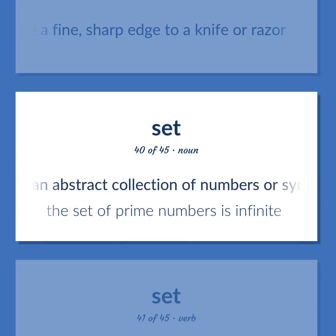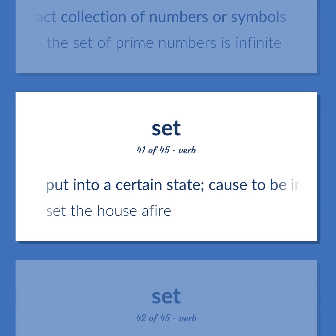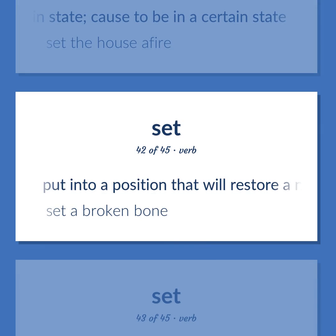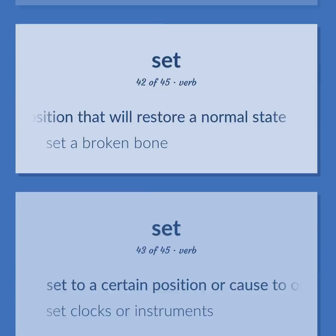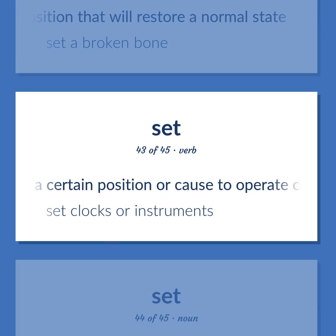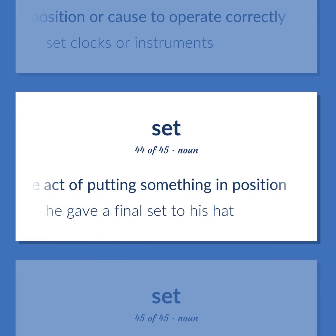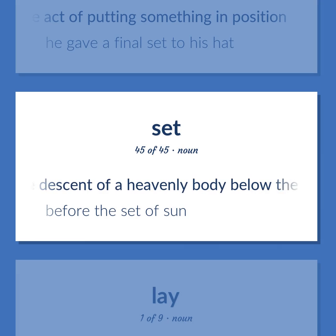Set: Mathematics — an abstract collection of numbers or symbols; the set of prime numbers is infinite. Put into a certain state; cause to be in a certain state — set the house afire. Put into a position that will restore a normal state — set a broken bone. Set to a certain position or cause to operate correctly — set clocks or instruments. The act of putting something in position — he gave a final set to his hat. The descent of a heavenly body below the horizon — before the set of sun.